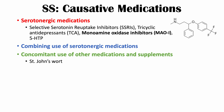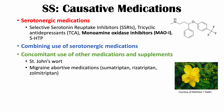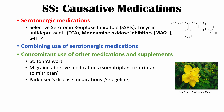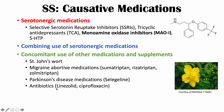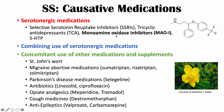If you're already on a stable dose of a serotonergic antidepressant and add any of the following, your risk increases: the natural supplement St. John's Wort, migraine abortive medications like sumatriptan, rizatriptan, and zolmitriptan, selegiline (a Parkinson's disease medication), antibiotics such as linezolid and ciprofloxacin, opiate analgesics like meperidine and tramadol, cough medications containing dextromethorphan (found in Robitussin), and antiepileptics like valproate and carbamazepine.